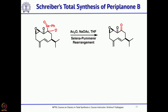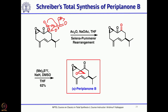When treated with acetic anhydride, you get the OC(O)CH3 intermediate, and then intramolecularly this attacks and the carbonyl group forms, giving a 1,2-diketone. This is the seleno-Pummerer rearrangement. Now with two ketones, selectively the trimethylsulfonium ylide adds to one ketone — not only regioselectively but stereoselectively — to give a 62% yield of the required natural product Periplanone B.